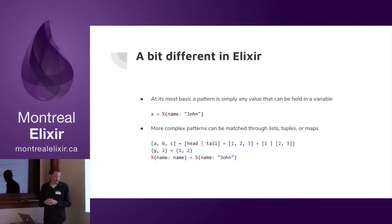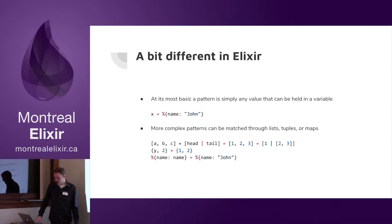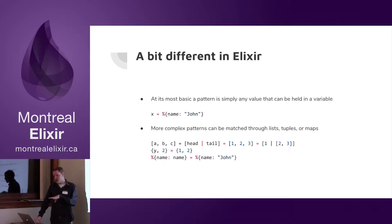In the final example, we're simply setting name to John using a map pattern. Now, this is not simply setting a value.